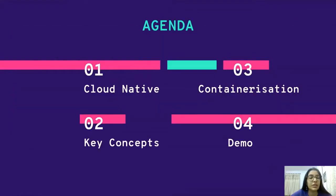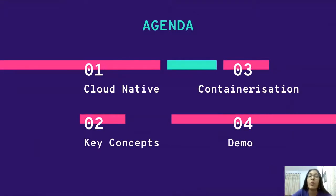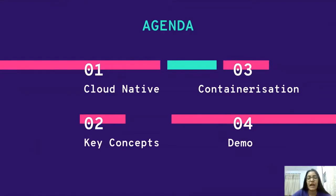Let us now see what's the agenda of this talk. We have basically four major components. The first one is discussing about cloud native — demystifying what it is, why we need it, and how to adopt the cloud native paradigm. The second one focuses on the key concepts or characteristics of cloud native technology, particularly containerization, which I would like to stress upon and demonstrate with a small demo.